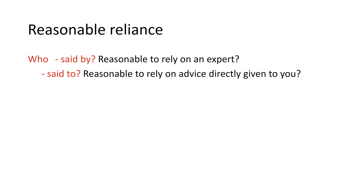The second W considers whether advice was given directly to the claimant. It is much more likely to be reasonable to rely if the advice was given directly from the defendant to the claimant. This was confirmed in Goodwill v BPAS, the case about a man having a vasectomy, where a later girlfriend tried to rely on advice given to him about the effectiveness of the vasectomy when she became pregnant. The court said there couldn't be liability to a later class of people — it would open the floodgates of litigation. The advice had not been given directly to her and it was not reasonable for her to rely on it.